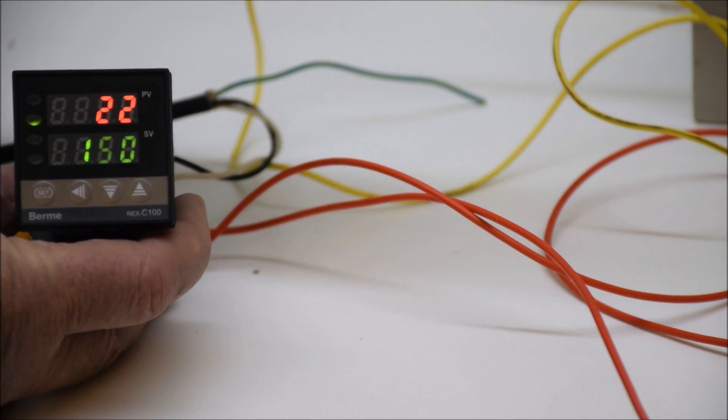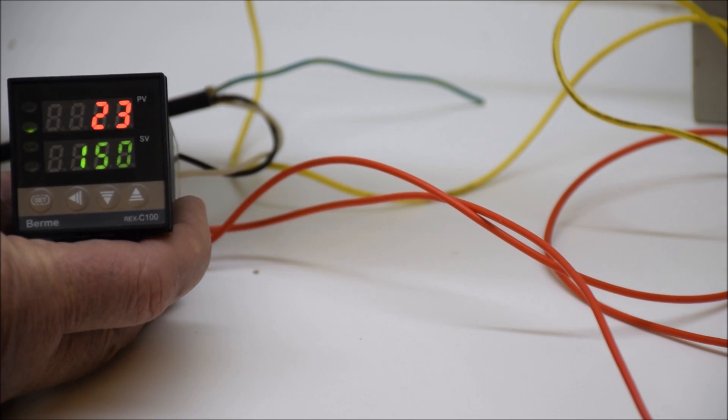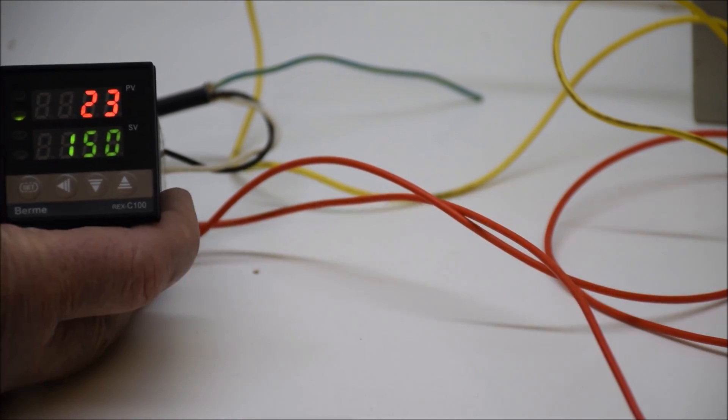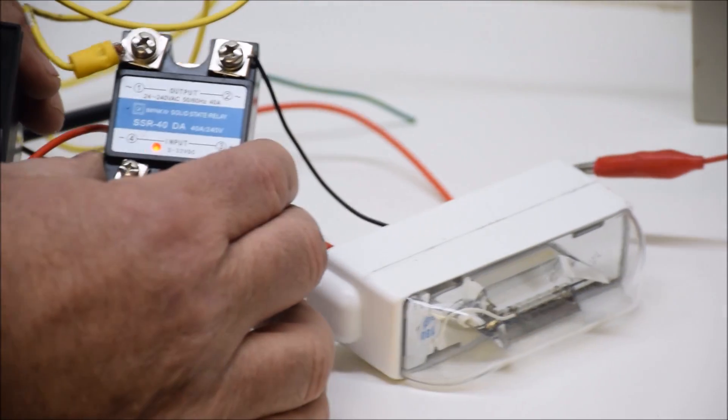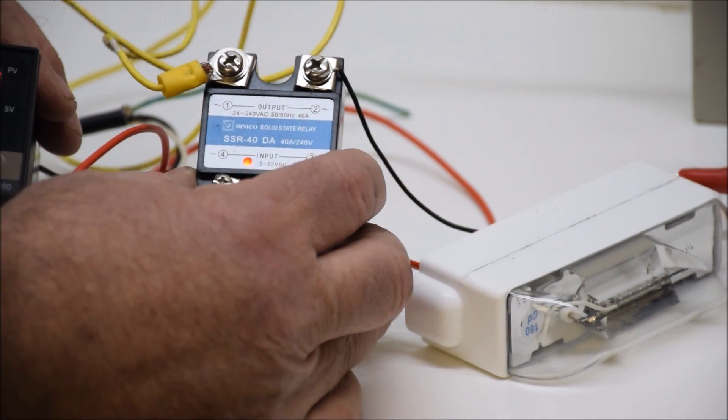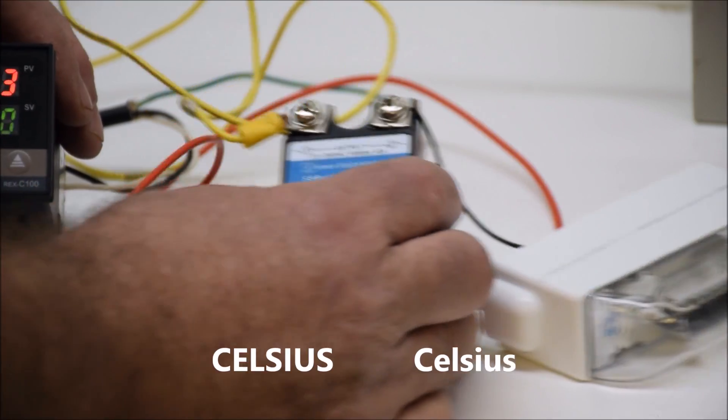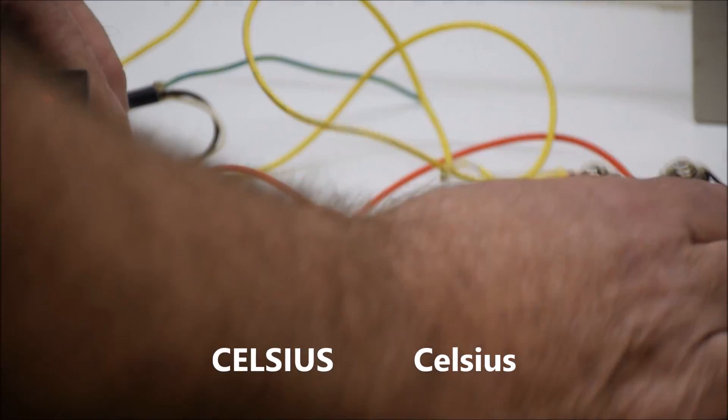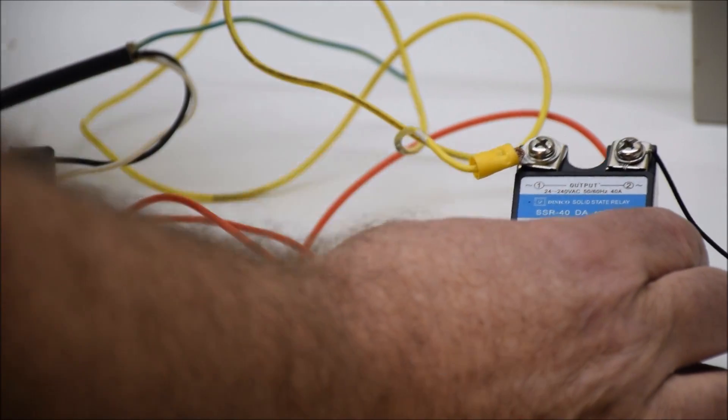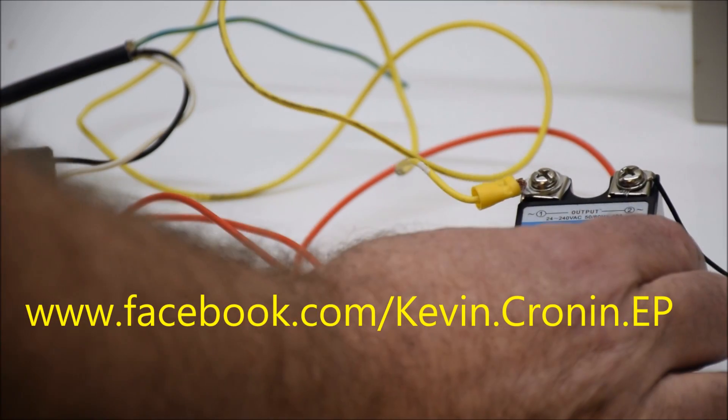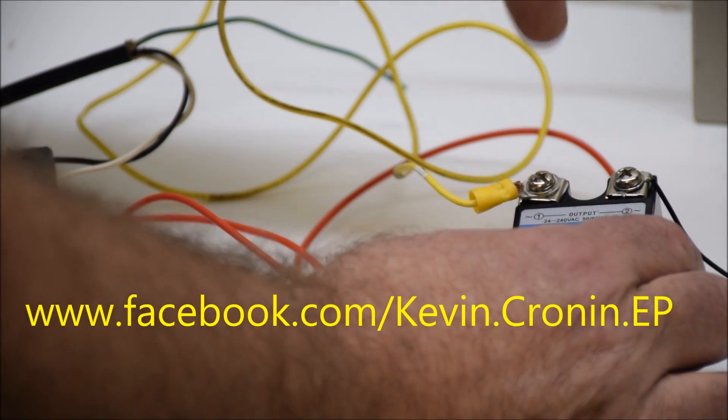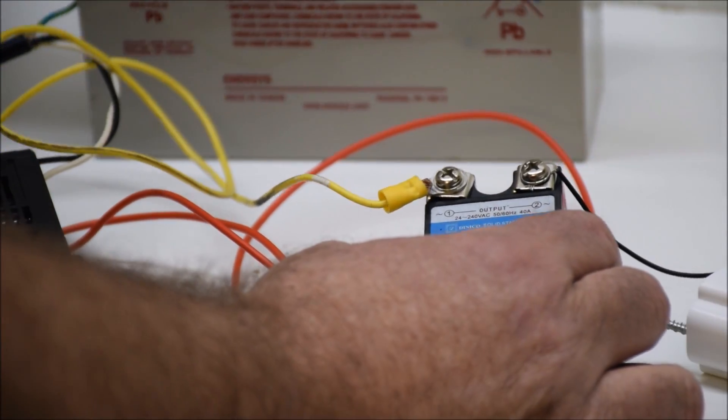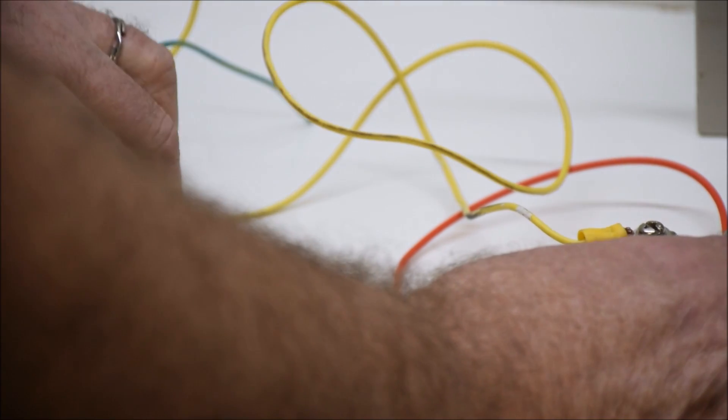As you can see from my body heat, it's starting to raise the temperature. The bottom number, and if you notice, there's a light flashing. I have the unit wired to the SSR relay. Because it's below 150 centigrade, that's what the bottom is set at, it turns on the relay, which allows electricity to flow through it, which it will be doing when I hook it to the kiln for the heating elements, but at 220 volts versus 12 volts.